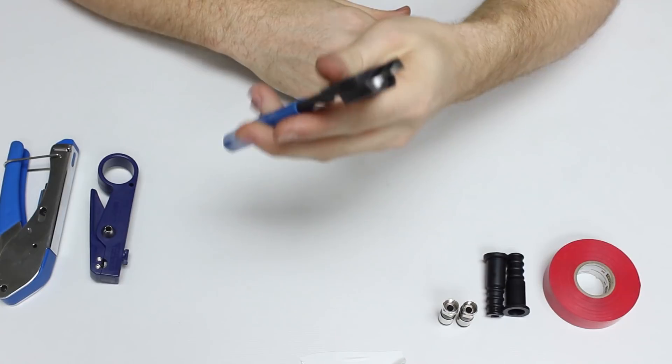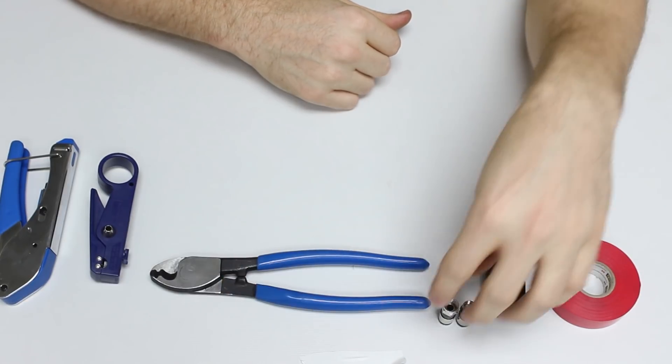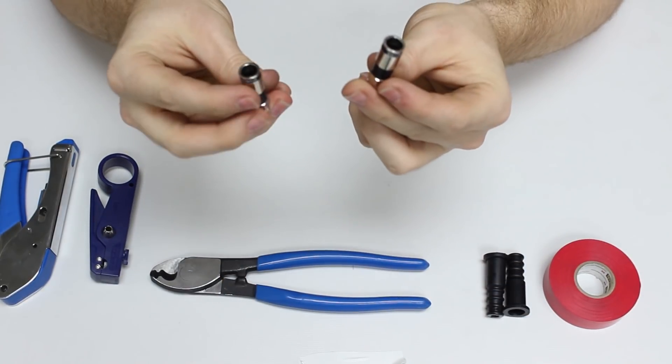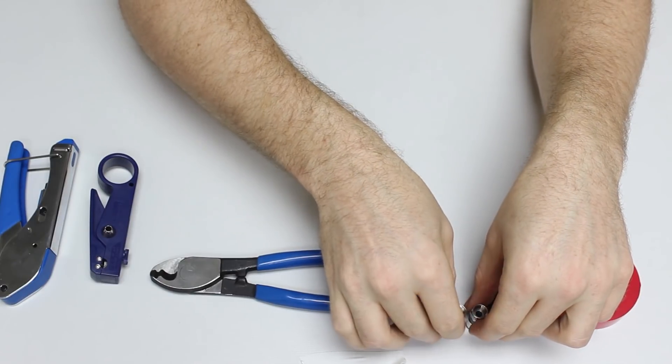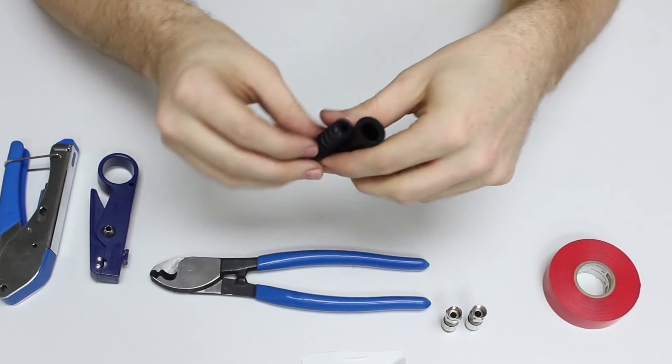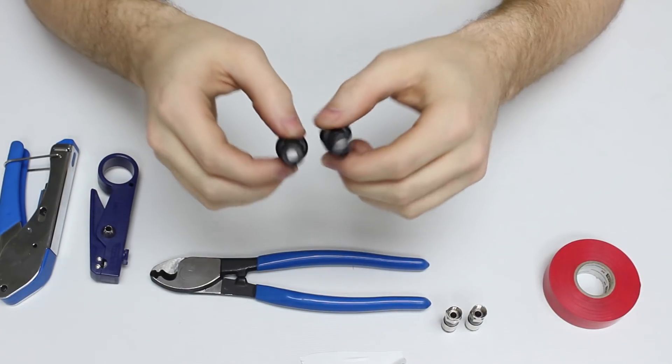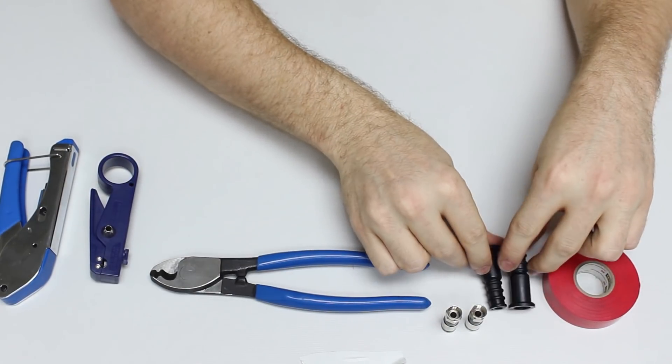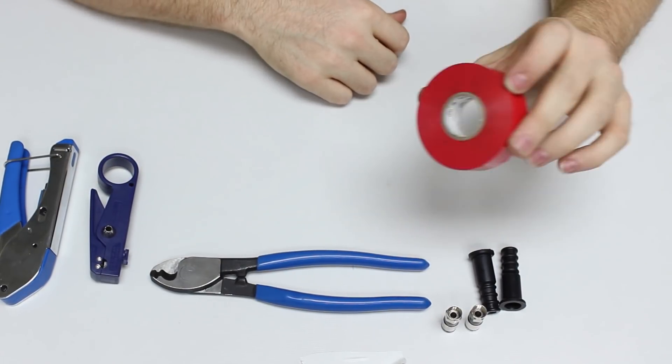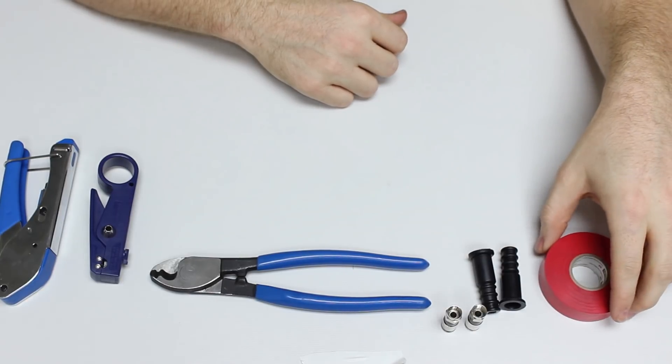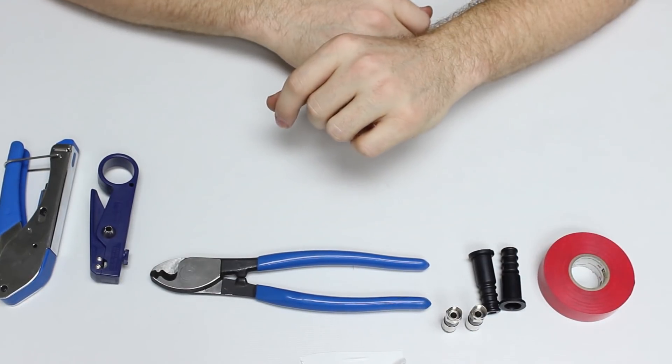You're going to need your standard pair of cutters, your universal RG6 ends, and for outdoor use you're going to have your rubber boots. We'll go over the use of those and start putting those on here in a minute. And also some sort of colored electrical tape to mark the end of your transmit cable side.